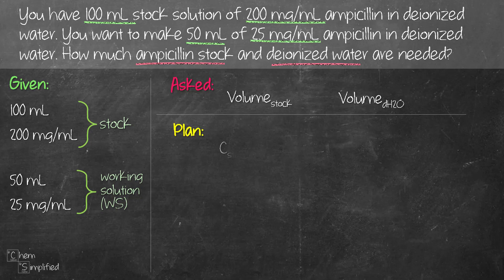So we need a plan. Since this is a dilution problem, we're gonna go with the C1V1 equals C2V2. I've modified the formula a little bit. So 1 is replaced by stock and then 2 is replaced by WS which is short for working solution.